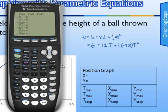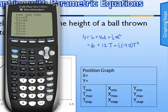You could hit alpha 4 to put a T on there, but if we press the X-T-theta-N button, notice when in parametric mode, instead of giving you an X, it gives you a T. Now, we can type in the position formula that we derived a second ago. That was 6 + 12*T + 1/2 * -9.8*T^2.